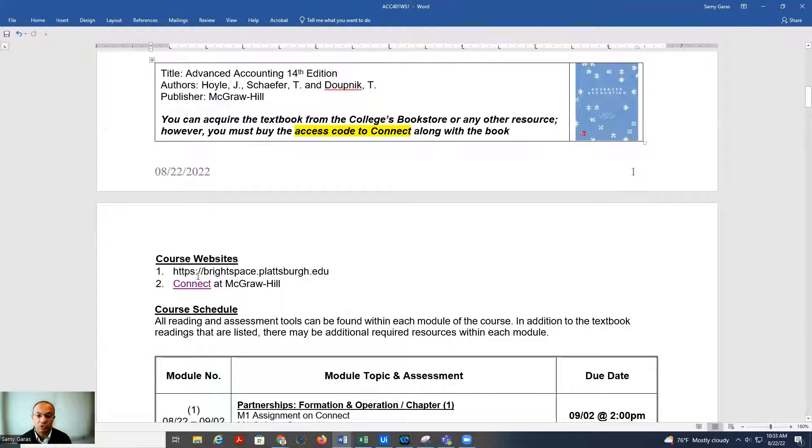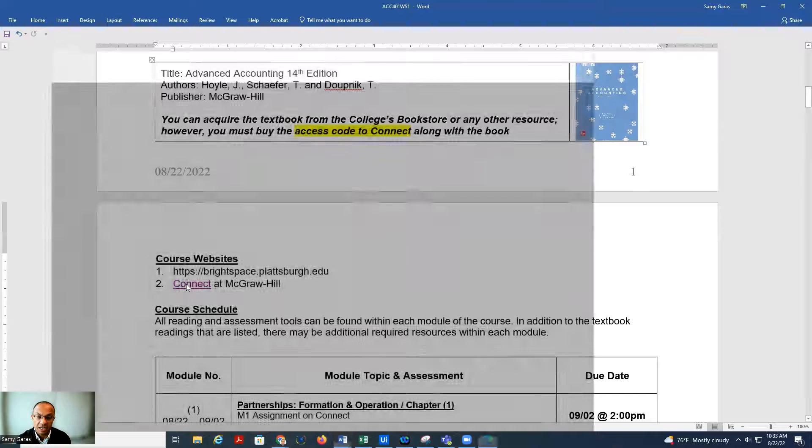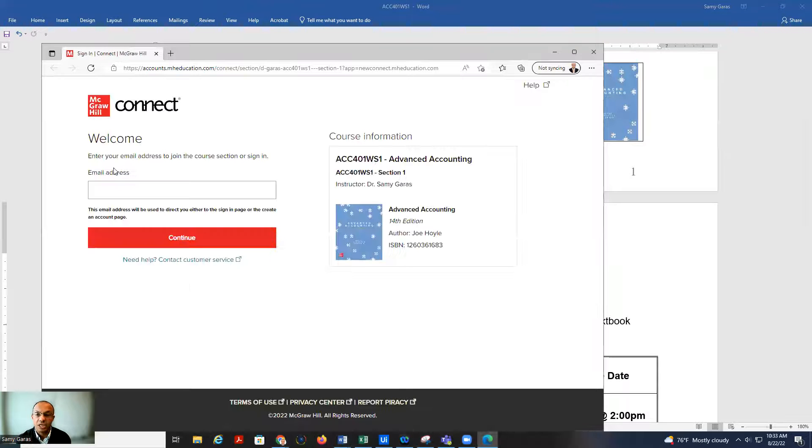The websites I'm going to use in this course first is Brightspace and then Connect. On Connect, if you click on the hyperlink I provided in the syllabus, this will take you to the Connect website where you need to write your email and then it will guide you either to sign up for the course or to create an account and go from there. Here you can see section 1 which is 401 WS1, but if you're in section 2 or 3, then it will show up section 2 or 3.